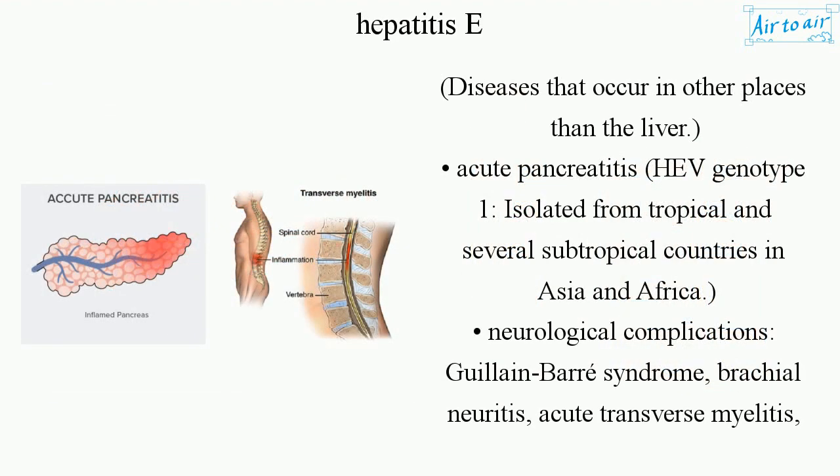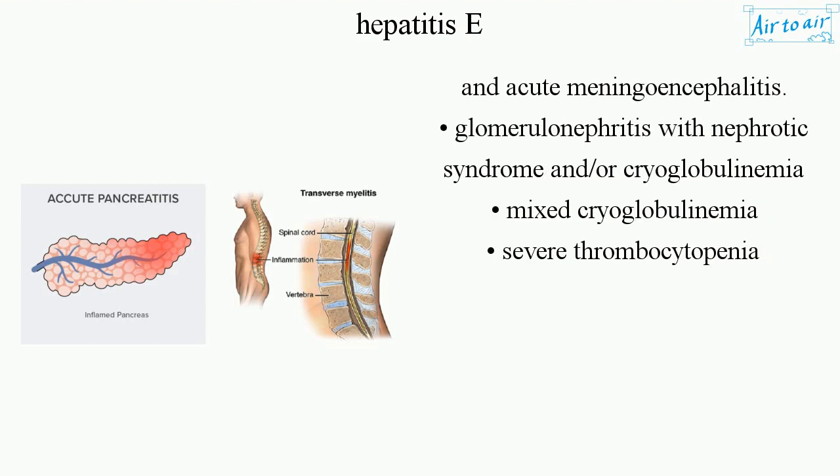Diseases that occur in other places than the liver include acute pancreatitis. HEV genotype 1 is isolated from tropical and several subtropical countries in Asia and Africa. Neurological complications include Guillain-Barré syndrome, brachial neuritis, acute transverse myelitis, and acute meningoencephalitis. Glomerulonephritis with nephrotic syndrome and/or mixed cryoglobulinemia, and severe thrombocytopenia.